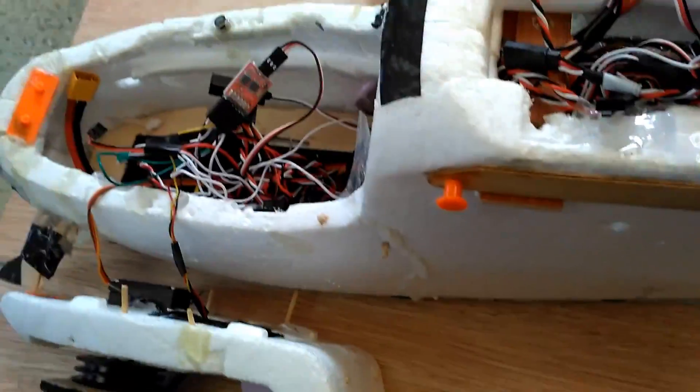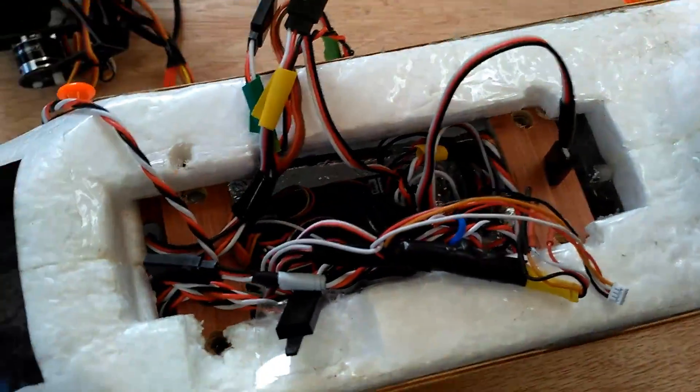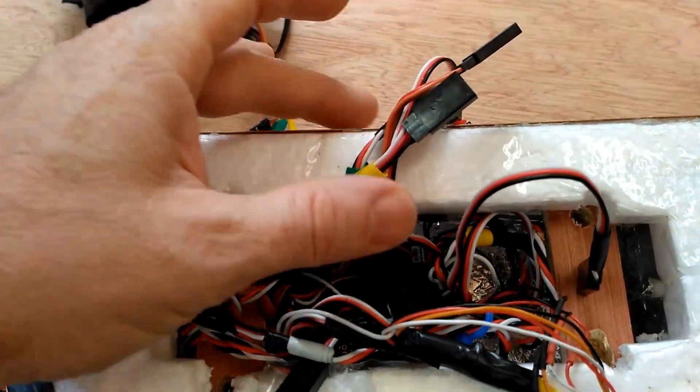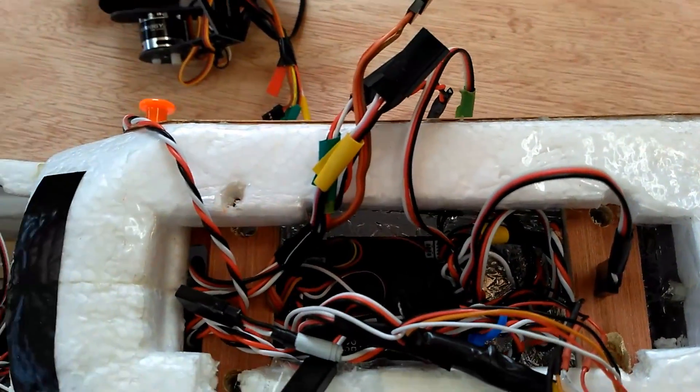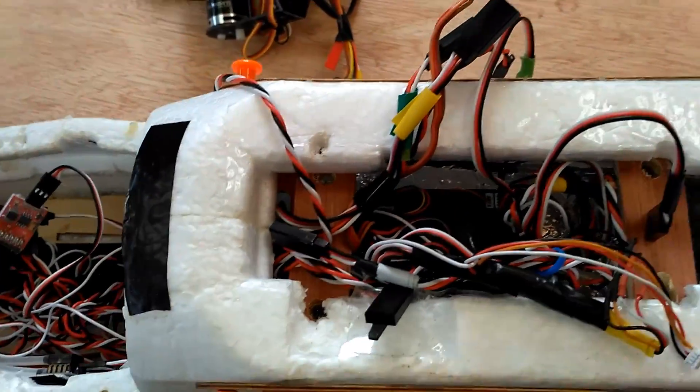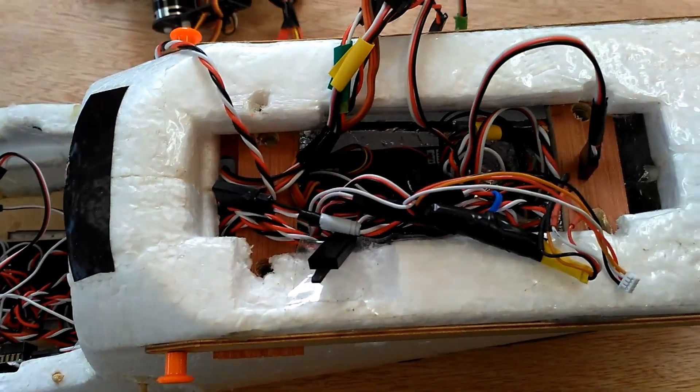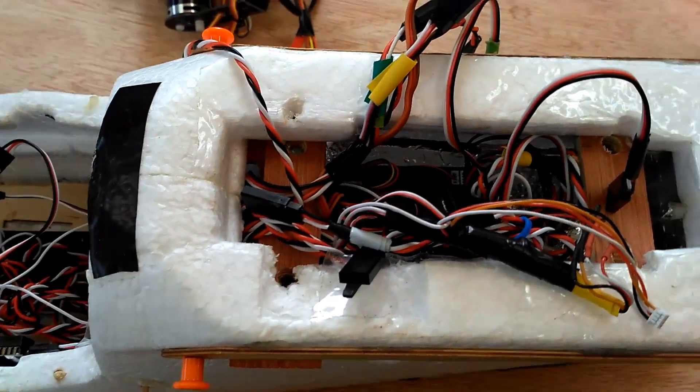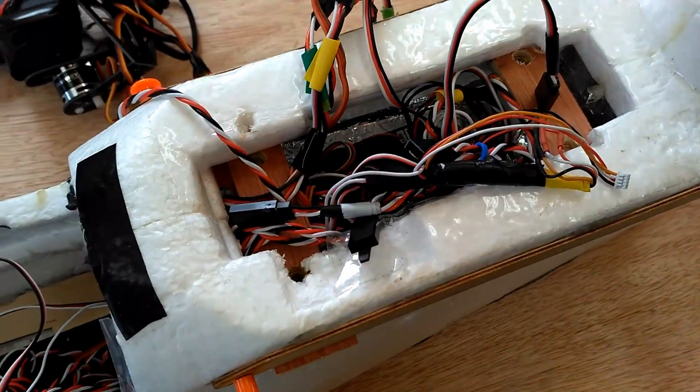So things I learned. Putting all the stuff in the wings means you have a million connections to make when you get to the field. So I learned from this experience when I built my second plane and I did my own little hubs that I just plug in when the wings plug in. So that was really worth learning and makes assembling my next plane way easier.